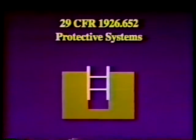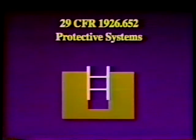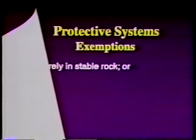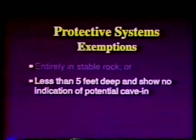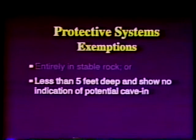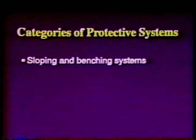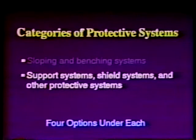OSHA Standard 29 CFR 1926-652 contains requirements for the protection of employees from cave-ins through the use of protective systems. OSHA requires that each employee in an excavation be protected from cave-ins by a protective system, except when excavations are made entirely in stable rock, or excavations are less than five feet in depth and determined by a competent person to show no indication of potential cave-in. OSHA divides protective systems into two categories: sloping and benching systems, and support systems, shield systems, and other protective systems.